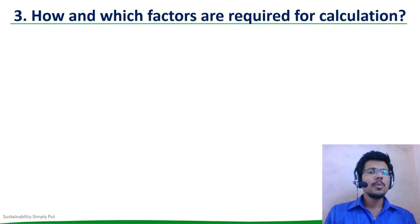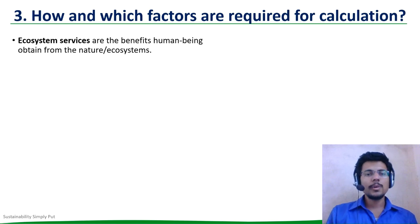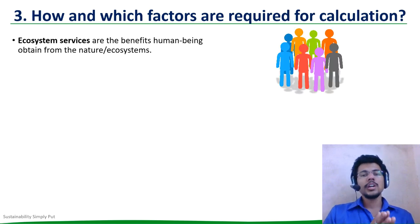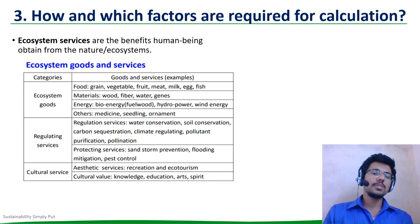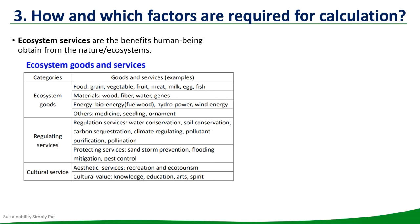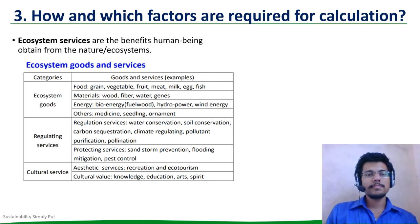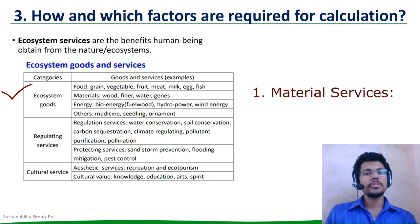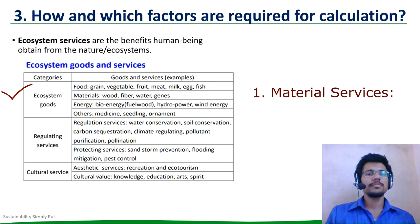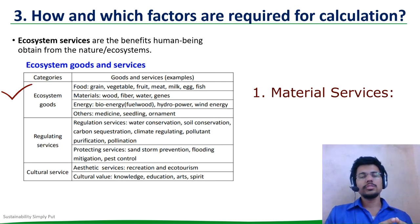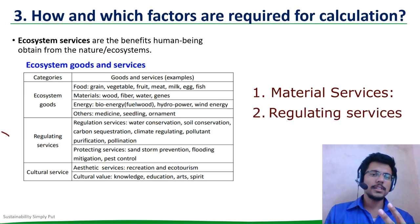Third point: how and which factors are required for calculation? Ecosystem services are the benefits human beings obtain from nature or ecosystems. Ecosystem services — meaning goods and services — can be classified into three categories. First is material services. These include the contribution of nature to the provision of food, water supply, and so forth, and things that make our life comfortable, like wood, fiber, fruits, etc.